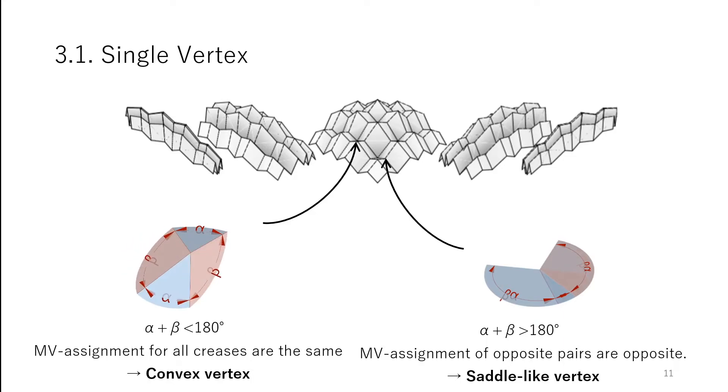When sum of two-sector angles alpha plus beta is smaller than 180 degrees, the MV assignment for all creases are the same. We call them convex vertices.